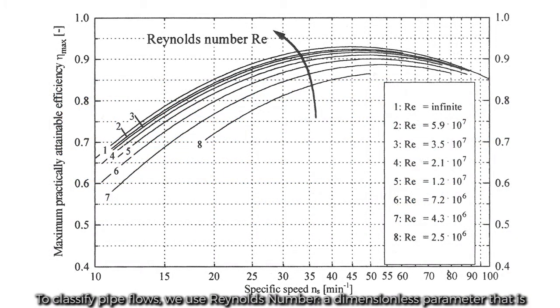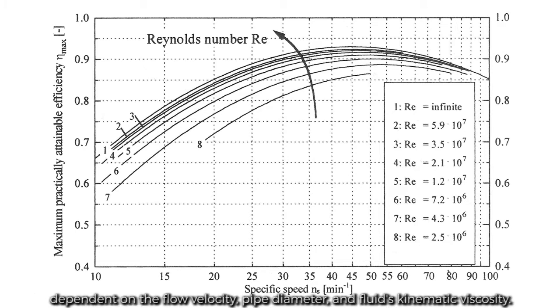To classify pipe flows, we use Reynolds number, a dimensionless parameter that is dependent on the flow velocity, pipe diameter, and fluid's kinematic viscosity.